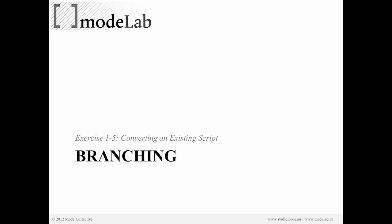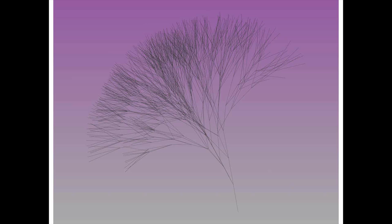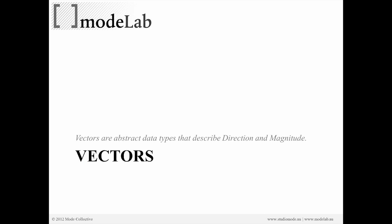The last thing we're going to do is look at how you might convert an existing script into a script that you can use in Grasshopper. In order to do that, we're going to look at this simple branching script that we wrote a while back. We need to review how exactly the branching logic works, which is going to be done through vectors and recursion.